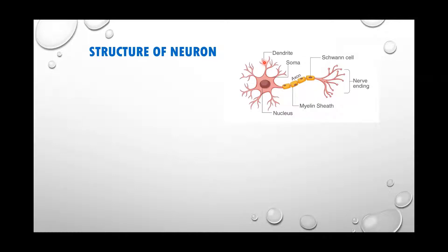Nerve cells help in control and coordination. How does the neuron receive information from the environment? It is through sensory organs. Sensory organs contain receptors, and these receptors are connected to the dendrite — the nerve cell. Dendrites take in information from the receptors, which is in the form of a chemical, and it sets off a chemical reaction in the cell body.